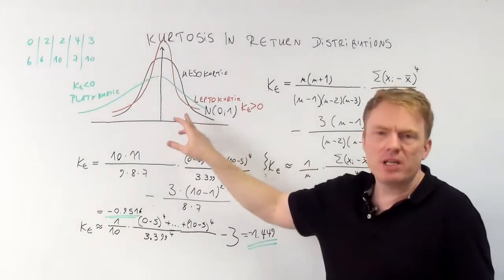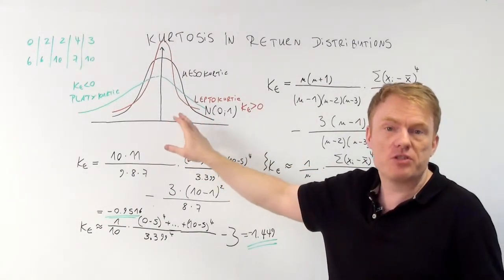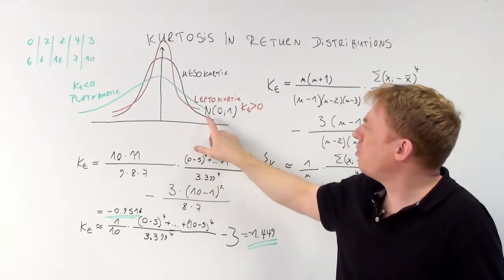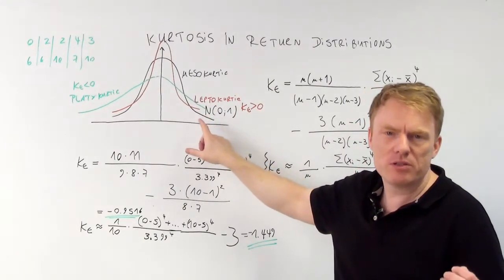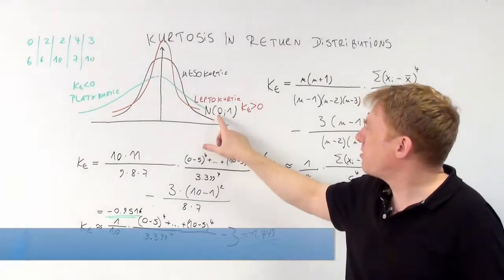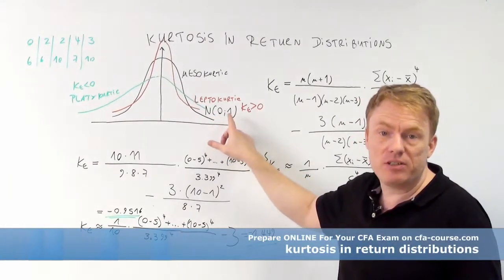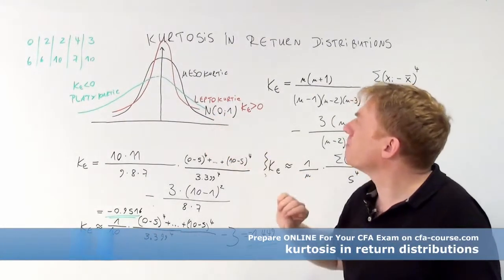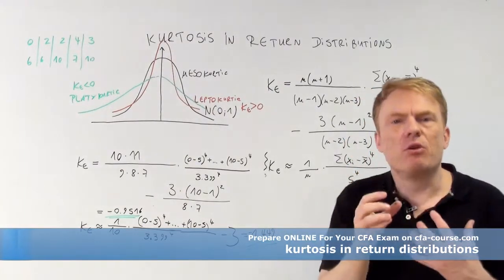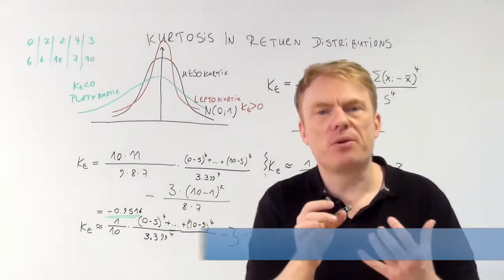Take a look here at the standard normal distribution, which is the black curve. This is a normal distribution with an expected value of 0 and a standard deviation of 1. This standard normal distribution is called mesocurtic.